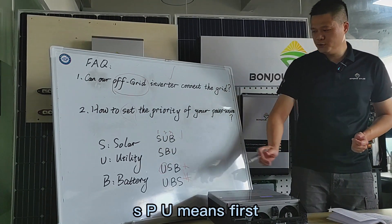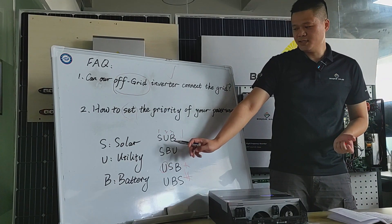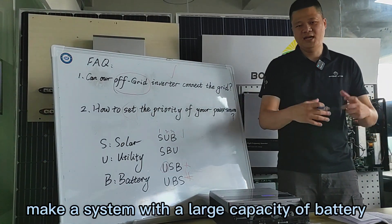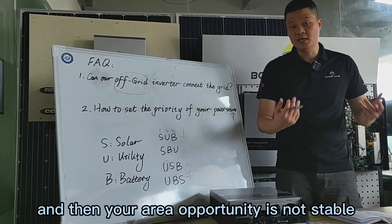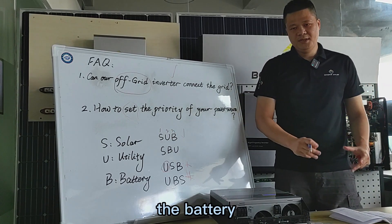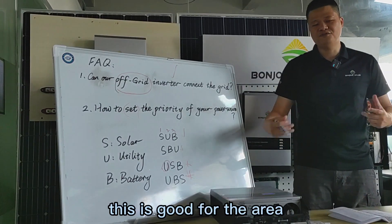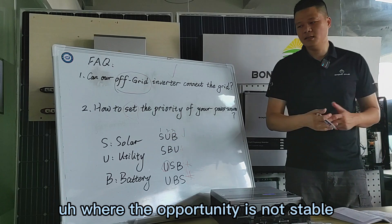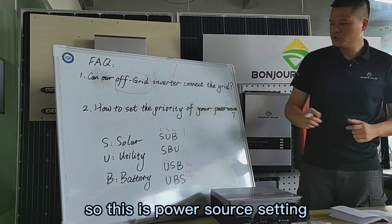SBU means: first priority is also solar, then second is battery — meaning you have a system with large battery capacity — and last is utility. This is good for areas where the utility is not stable and you prefer battery as the second priority.